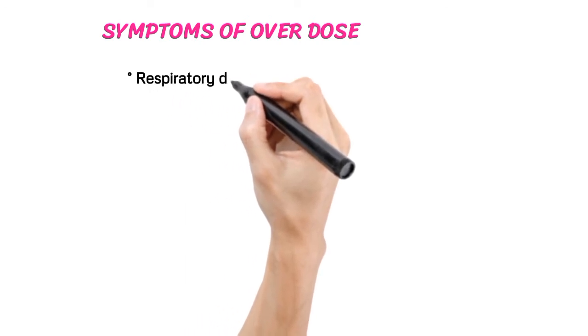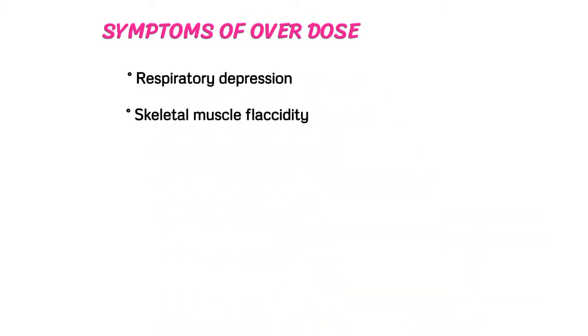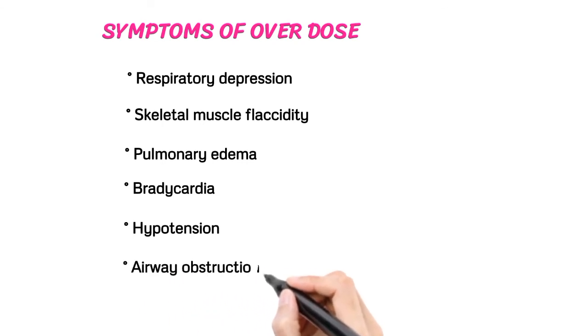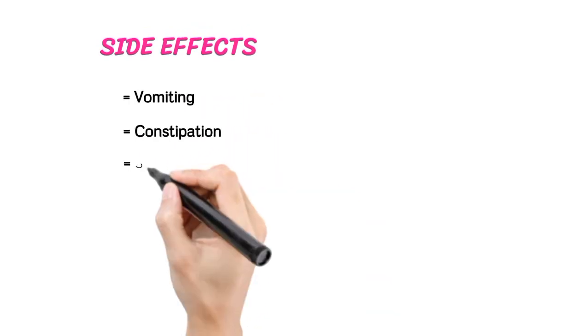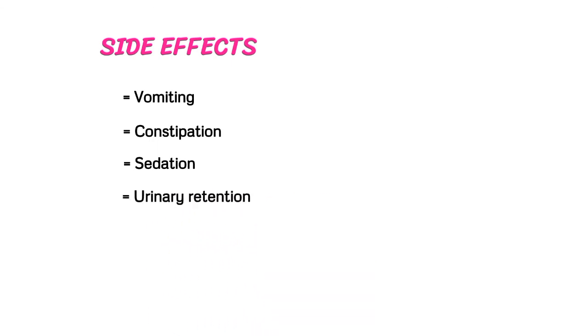Symptoms of overdose: Respiratory depression, skeletal muscle rigidity, pulmonary edema, bradycardia, hypotension, airway obstruction. Side effects: Vomiting, constipation, sedation, urinary retention, hallucinations, confusion.